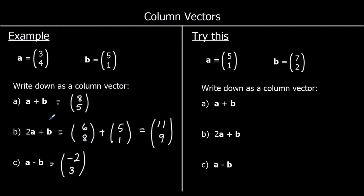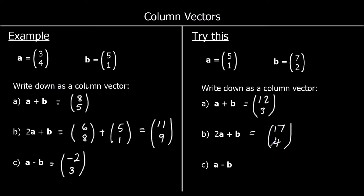OK, one for you to try. So A plus B: we're going to add up the movements in the x direction. 5 and 7 make 12. And add up the movements in the y direction. 1 and 2 make 3. For 2A plus B: 2 fives are 10, plus 7 is 17. 2 ones are 2, plus 2 is 4. So 2A plus B is 17, 4. And A minus B: 5 take away 7 is negative 2, and 1 take away 2 is negative 1.